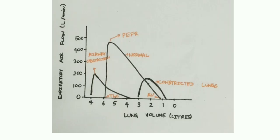In restrictive lung diseases, both the flow rate and the volume of the lung decrease as the lung is constricted. The peak expiratory flow rate is low, and the lung volume at the beginning of expiration is also low. Since the lung cannot expand properly due to fibrosis or other conditions preventing proper expansion, both volume and flow are reduced.